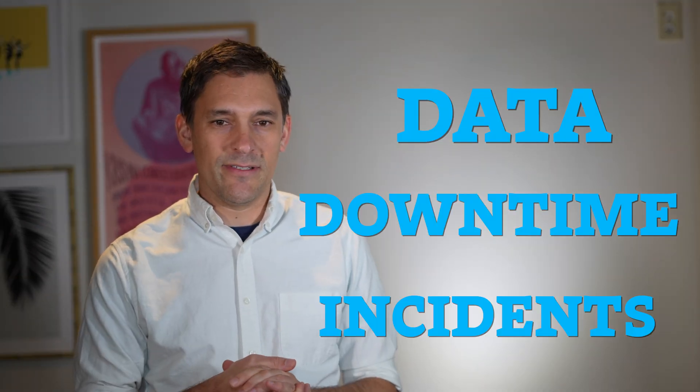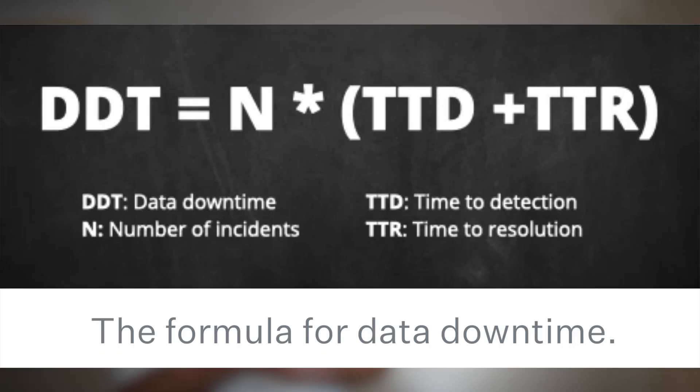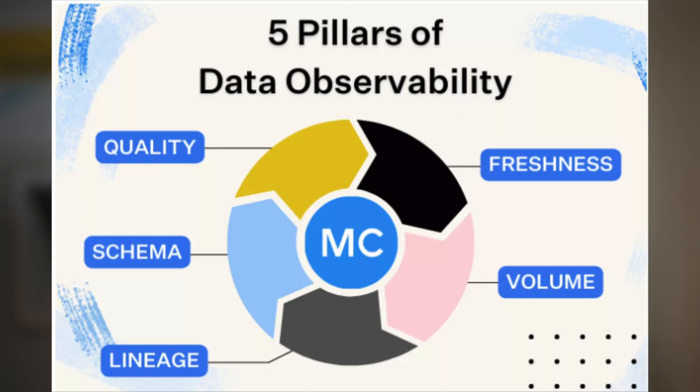If you think about it, data teams forever have been plagued by data downtime incidents — things that are caused by loss of data, incorrect data, or late data. Data observability is the concept about getting visibility over your data ecosystem so that you can actually monitor things like freshness, schema, volume, quality, and the lineage of data from end to end.